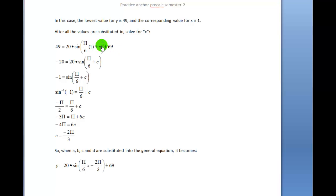Eventually what we're going to do is have C isolated and determine through algebra what the value of C is. We're simply going to subtract 69 from both sides, leaving us with negative 20 equals 20 times the sine of π over 6 plus C. Then we're going to divide both sides by 20 and get negative 1 equals the sine of π over 6 plus C.